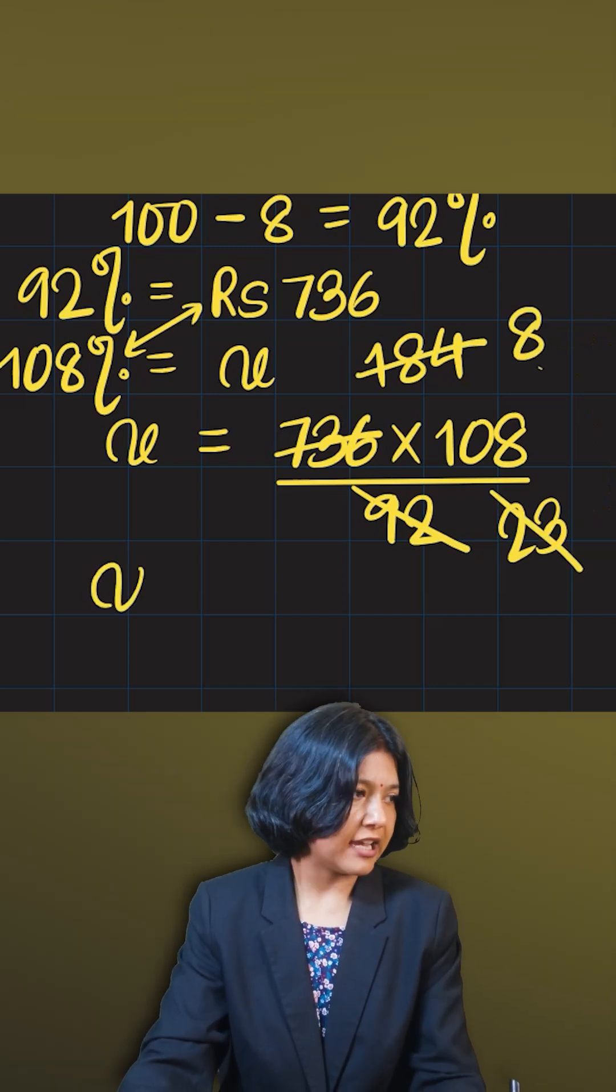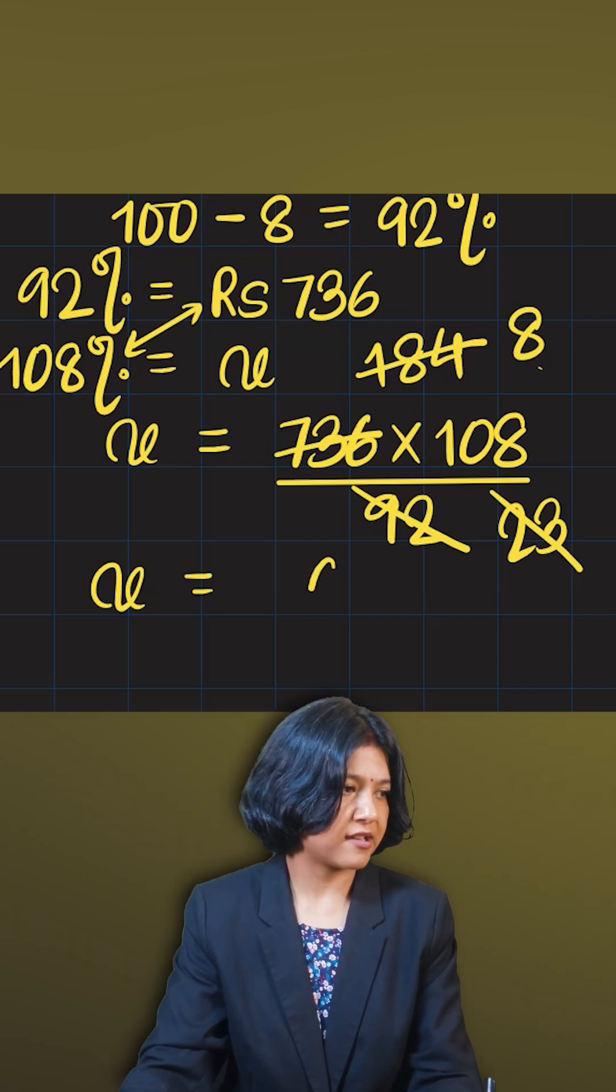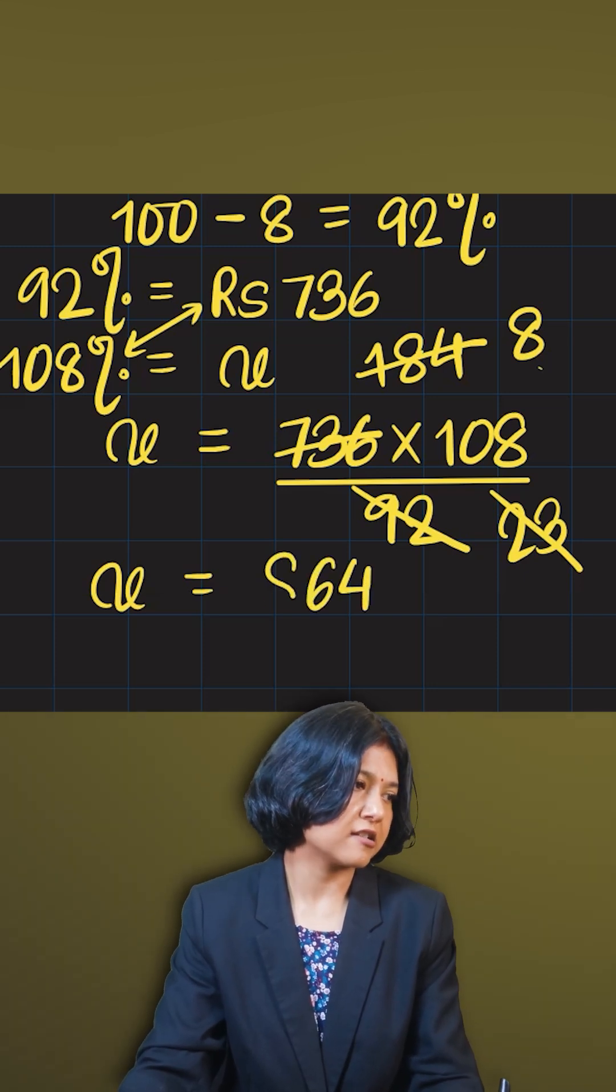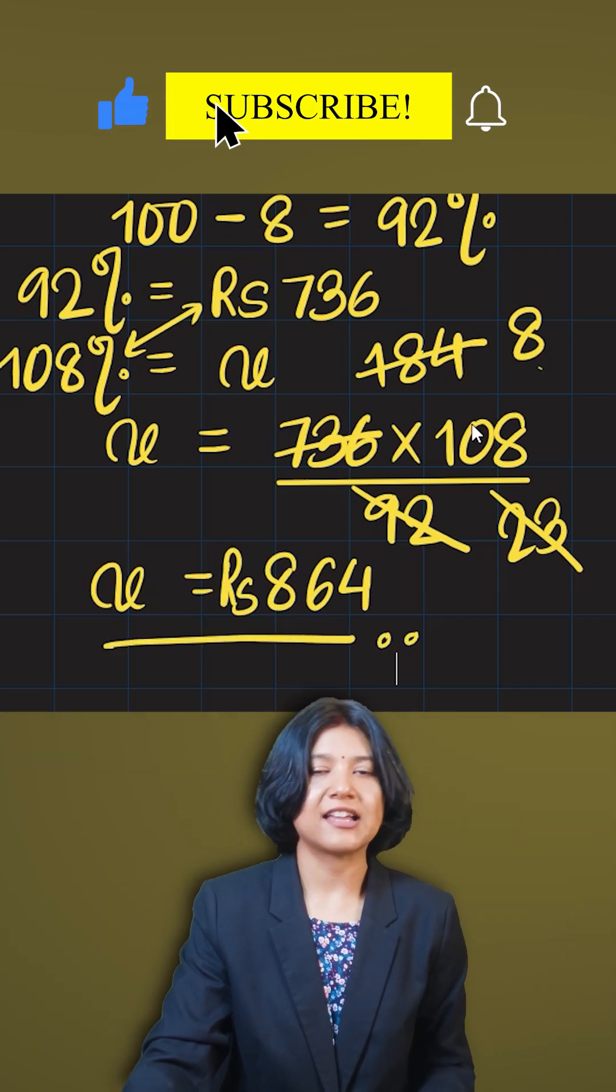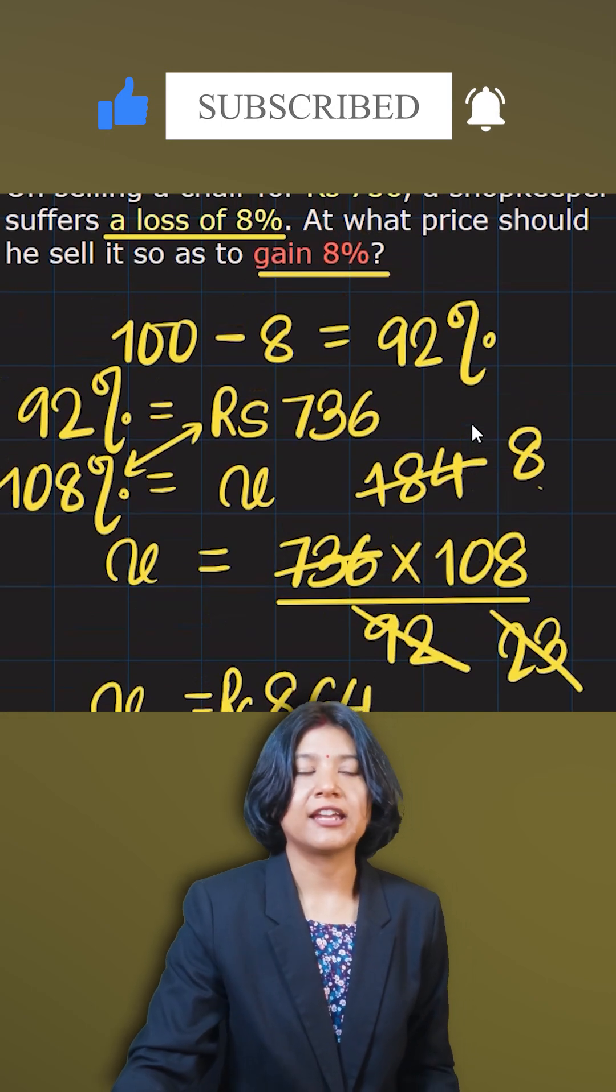So all we are doing is 8 times 108, which is 8 times 8 is 64, 8 ones are 8. So the answer is 864 rupees. This is the price that he should be selling at provided he wants to gain 8%.